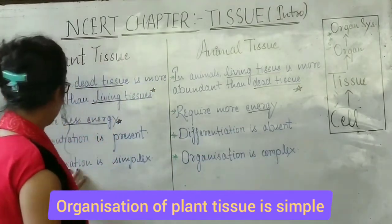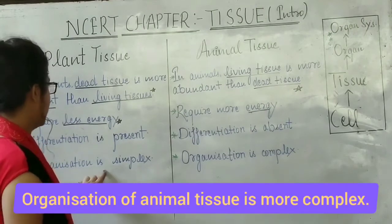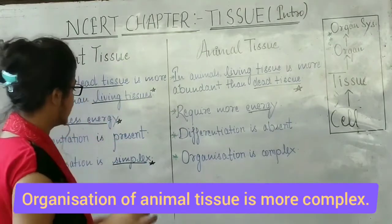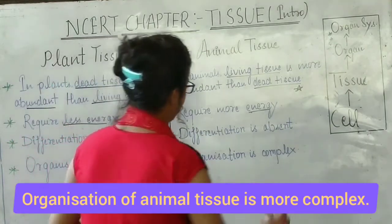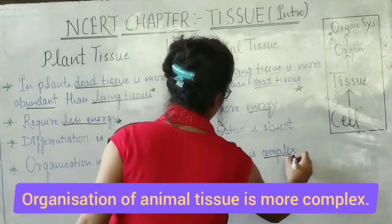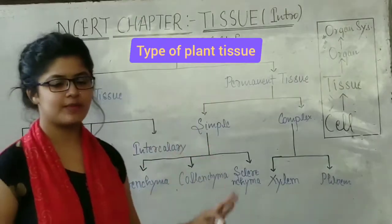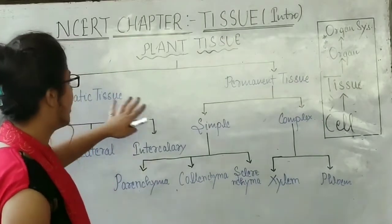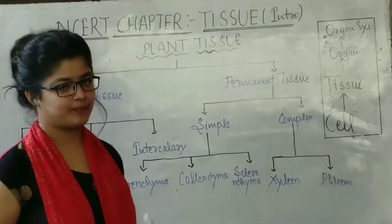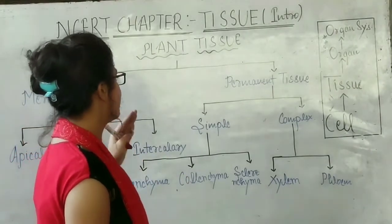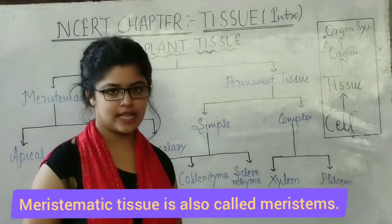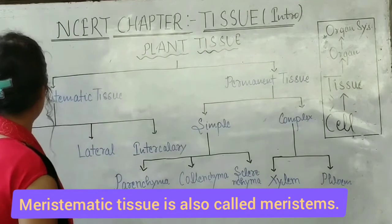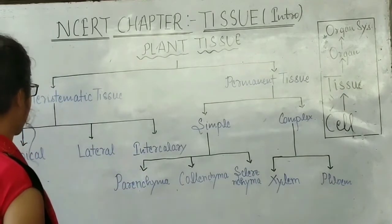The last point: organization in plants is simple, but in animals it is complex. Now, plant tissue is differentiated into meristematic tissue and permanent tissue — these are the two main types.